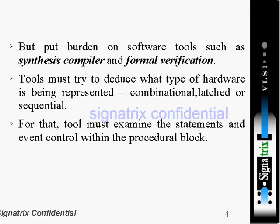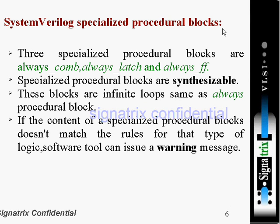In SystemVerilog we have extra enhancements — the tool no longer needs to go through each and every line. By looking at a single line it will know the designer's intention: latch, flip-flop, or combinational logic. In SystemVerilog we have three specialized procedural blocks: always_comb, always_latch, and always_ff. These specialized procedural blocks are all synthesizable and are infinite loops, same as the always procedural block. If the content of a specialized procedural block doesn't match the rules for that type of logic, the software tool can issue a warning message.